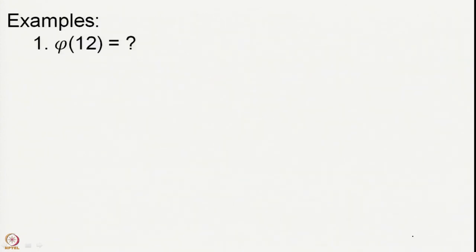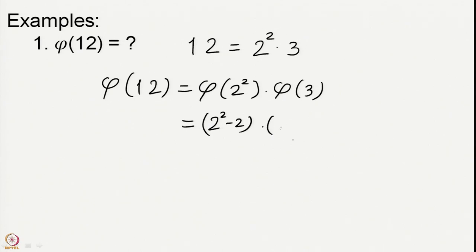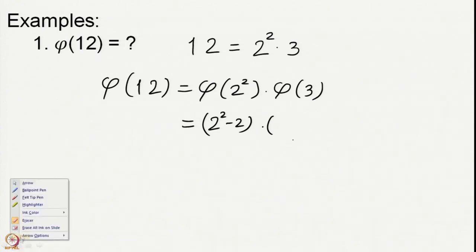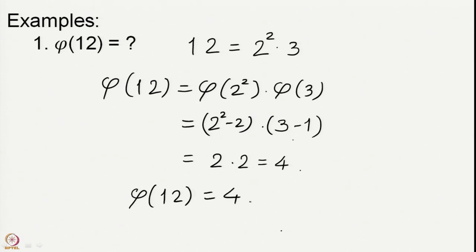Let us apply this to compute phi values. First, 12 = 2² × 3. Therefore φ(12) = φ(2²) · φ(3). Since 2² is a prime power, φ(2²) = 2² − 2 = 2, and φ(3) = 3 − 1 = 2. So we have 2 × 2 = 4. Thus φ(12) = 4.